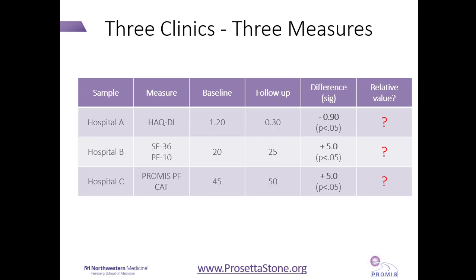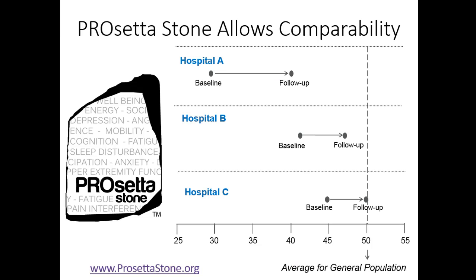Prosetta Stone facilitates comparisons when different measures were used. For example, three hospitals measured physical function before and after an intervention — all had statistically significant improvement. But how does one hospital or intervention compare to another? Using Prosetta Stone tables, I transformed all scores to the PROMIS metric. Now, pre-intervention physical function and the magnitude of improvement post-intervention can be compared across sites.